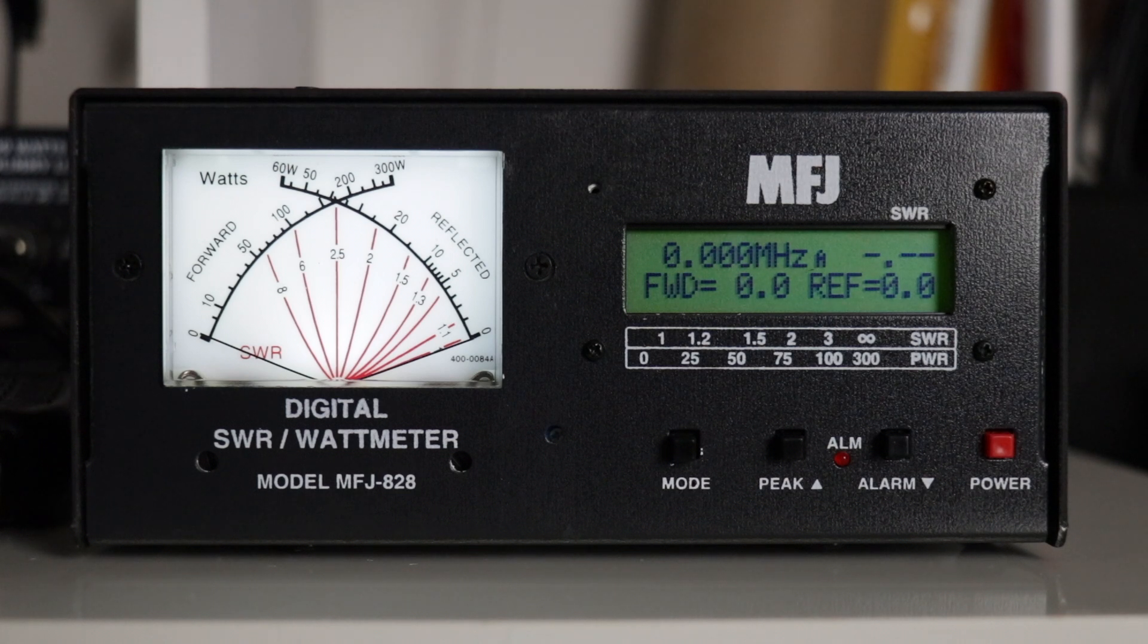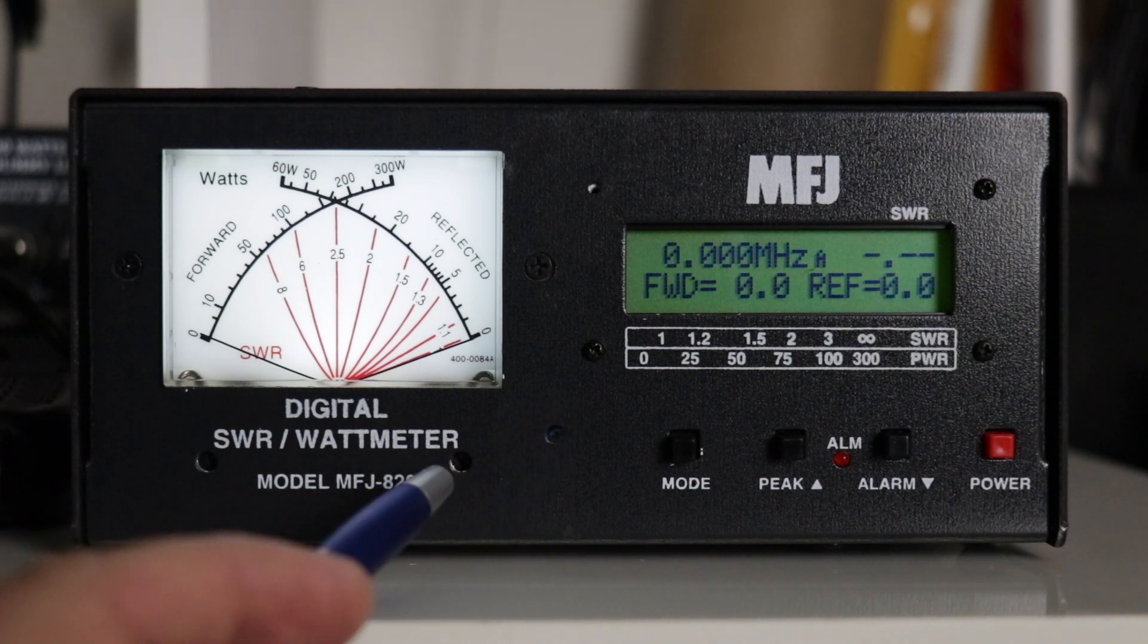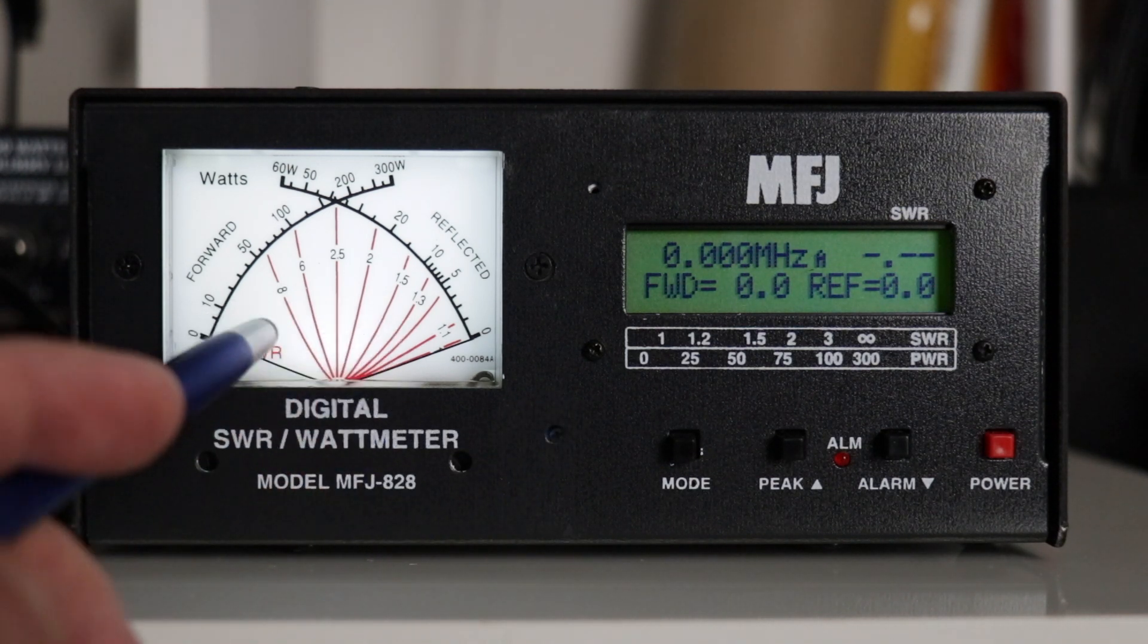There are instructions in the manual for calibrating the meter and adjusting the contrast. Contrast adjustment on the LCD is here, and then these two screws on the bottom are for adjusting the needles.